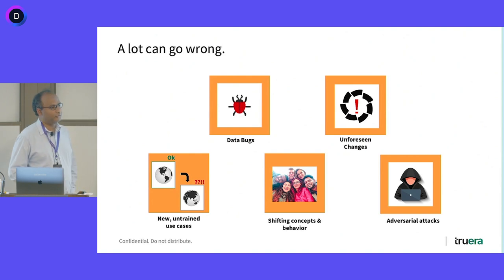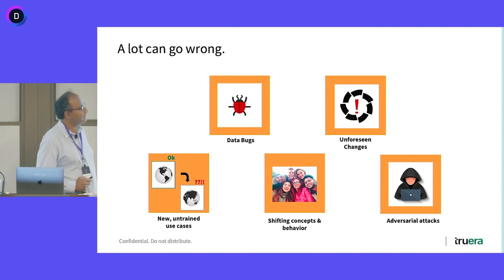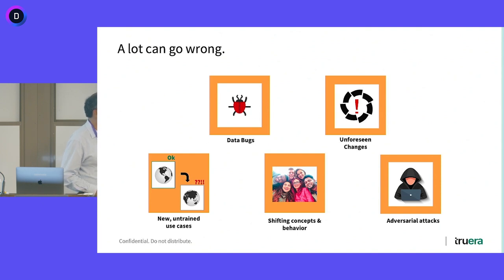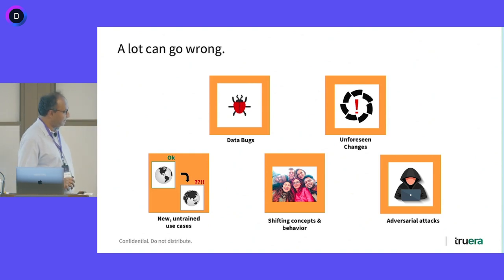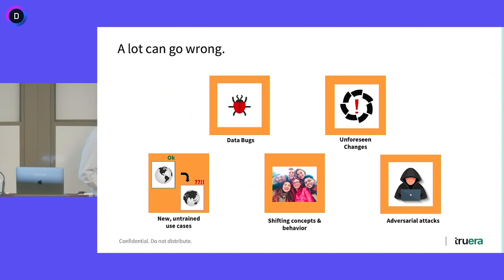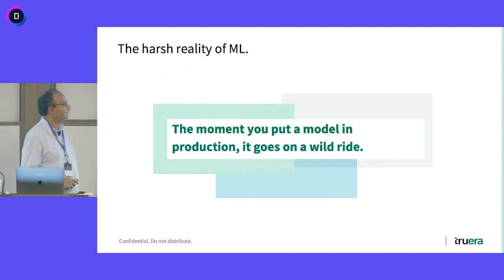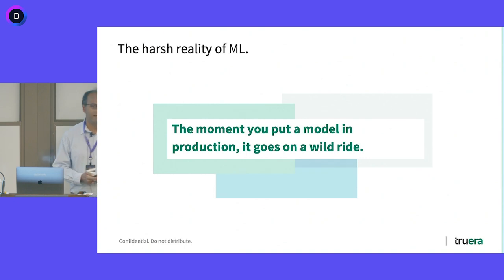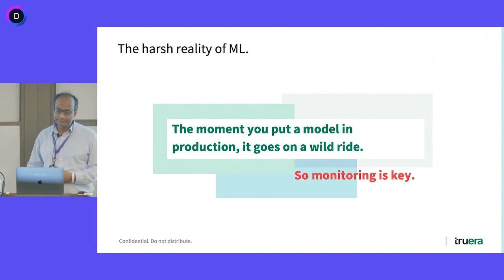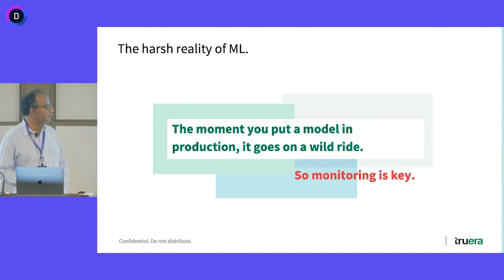There are lots of things that can go wrong. There can be data bugs, data pipelines might be broken, the world might change. You might get one of these pandemics that we have recently seen, which can break things in big ways. You can get new untrained use cases, shifting concepts and behavior, and adversarial attacks. The harsh reality is that the moment you put a model in production, it goes on a wild ride. And so monitoring is key.